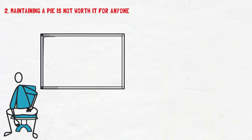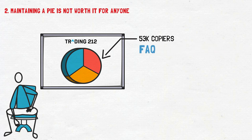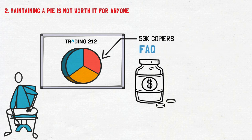Point 2: maintaining a Pie is not worth it for anyone. I have the biggest Pie on Trading 212. At the time of writing it has over 53,000 copiers, which is 10x the number of copiers as the next biggest, most popular Pie. This almost daily dividends Pie also gets several questions from copiers a day, even after providing an FAQ that covers the answers to the majority of questions. You might expect there to be some financial compensation for essentially providing a service for a non-insignificant number of Trading 212's customers.